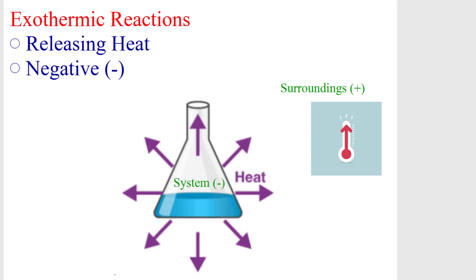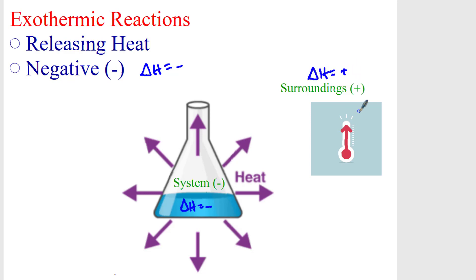An exothermic reaction is a reaction that ultimately releases heat. It has a delta H, which is called an enthalpy, that is going to be negative, which means it's going to be giving off heat. You can see here we have a system. This system has a delta H which is going to be negative. It's going to be releasing heat and that heat is going to go out into the surroundings, and that surroundings is going to be endothermic or absorb heat.